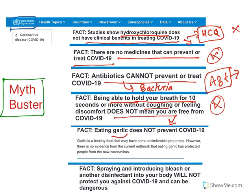Eating garlic does not prevent COVID-19. Garlic may have antimicrobial properties, but it cannot treat COVID-19. Next: spraying or introducing bleach or disinfectant into your body will not protect against COVID-19. One president suggested that taking disinfectant into your body may treat COVID, but that is not true. With this, I will conclude my video on COVID-19. Thank you for watching.